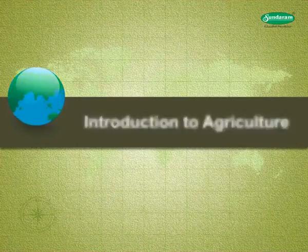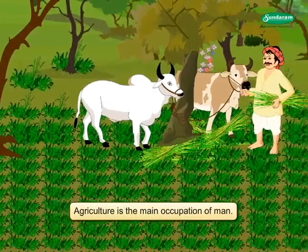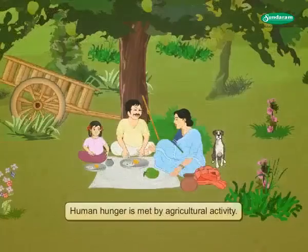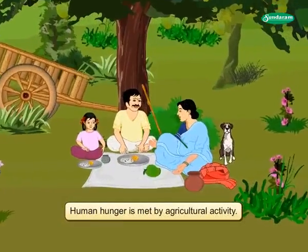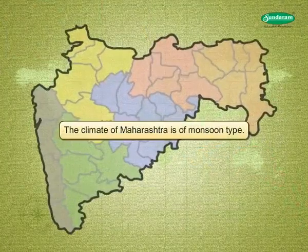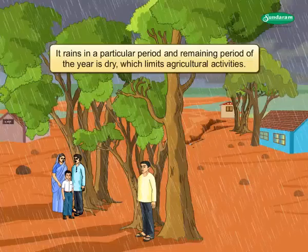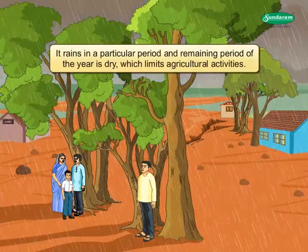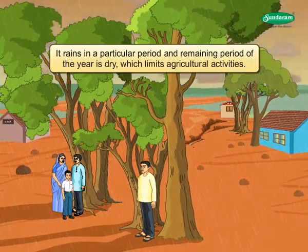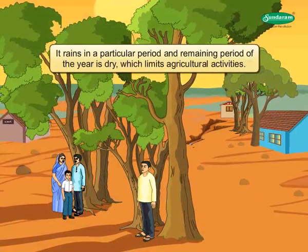Agriculture is the main occupation of man, and human hunger is met by agricultural activity. The climate of Maharashtra is of monsoon type. It rains in a particular period and the remaining period of the year is dry, which limits agricultural activities.